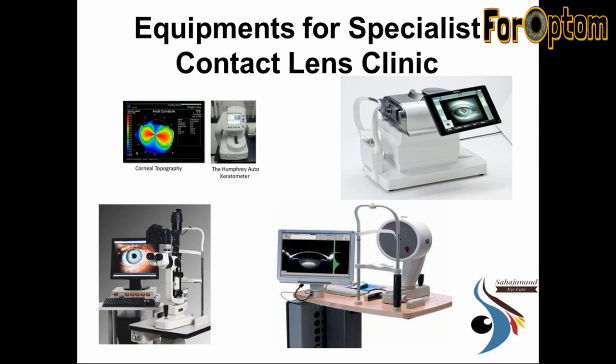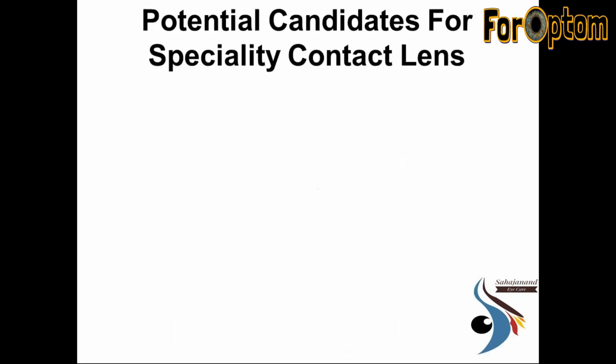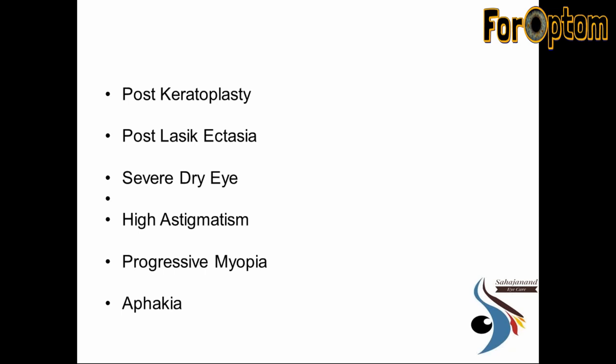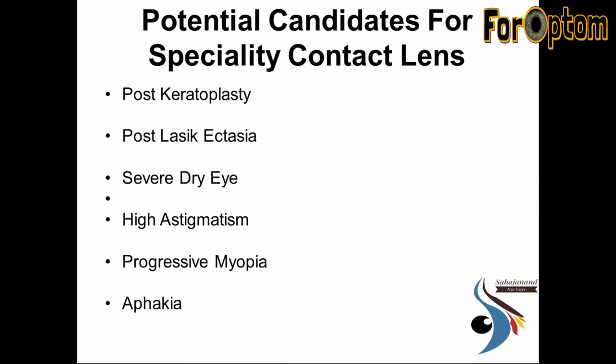The potential candidates for specialty contact lenses include: keratoconus, pellucid marginal degeneration, INTACS surgery, InTac surgery, keratoglobus, corneal injury, post-keratoplasty, post-LASIK ectasia, severe dry eye, high astigmatism, progressive myopia, and aphakia. Any patient with corneal abnormalities is a potential candidate for specialty contact lenses — it doesn't have to be only keratoconus.